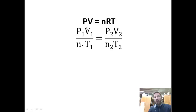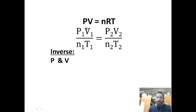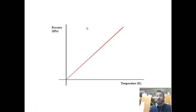Let's look at the things that show an indirect, or what we really call an inverse, relationship. Those are variables that are next to each other in the equation. For the inverse relationship, it's pressure and volume — we see this with Boyle's Law. If we increase pressure, the volume gets smaller and smaller, but it never actually approaches zero.